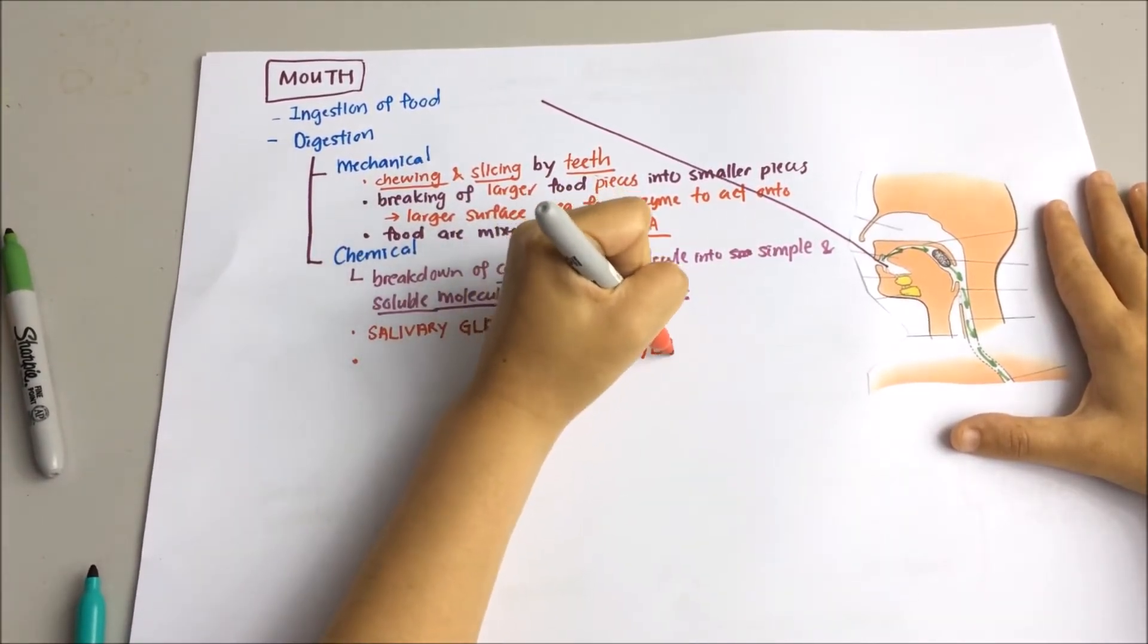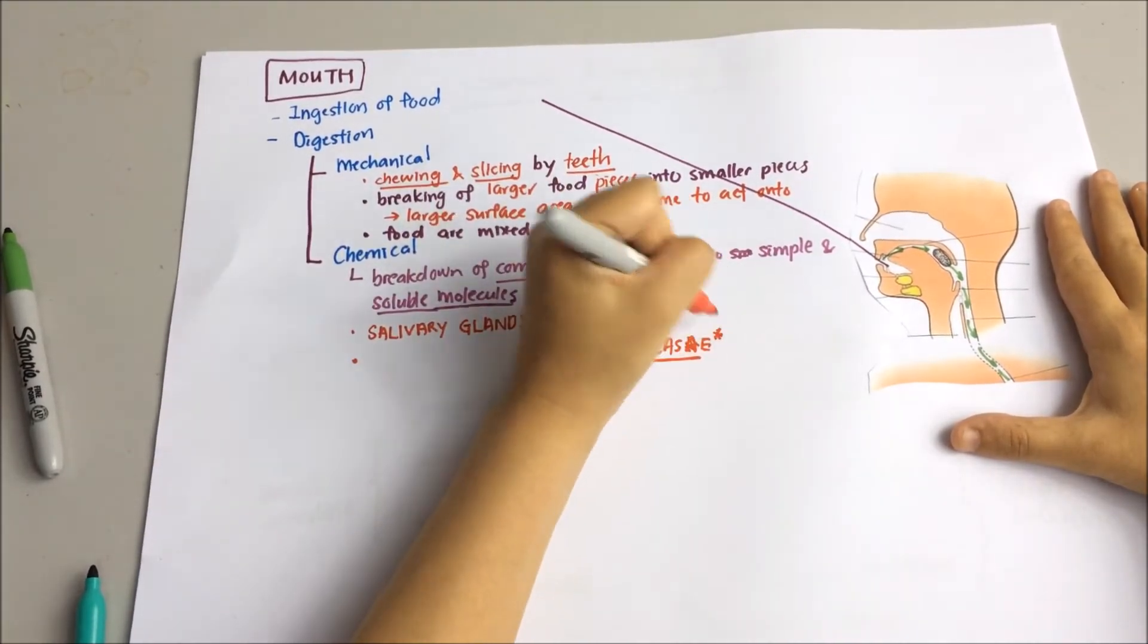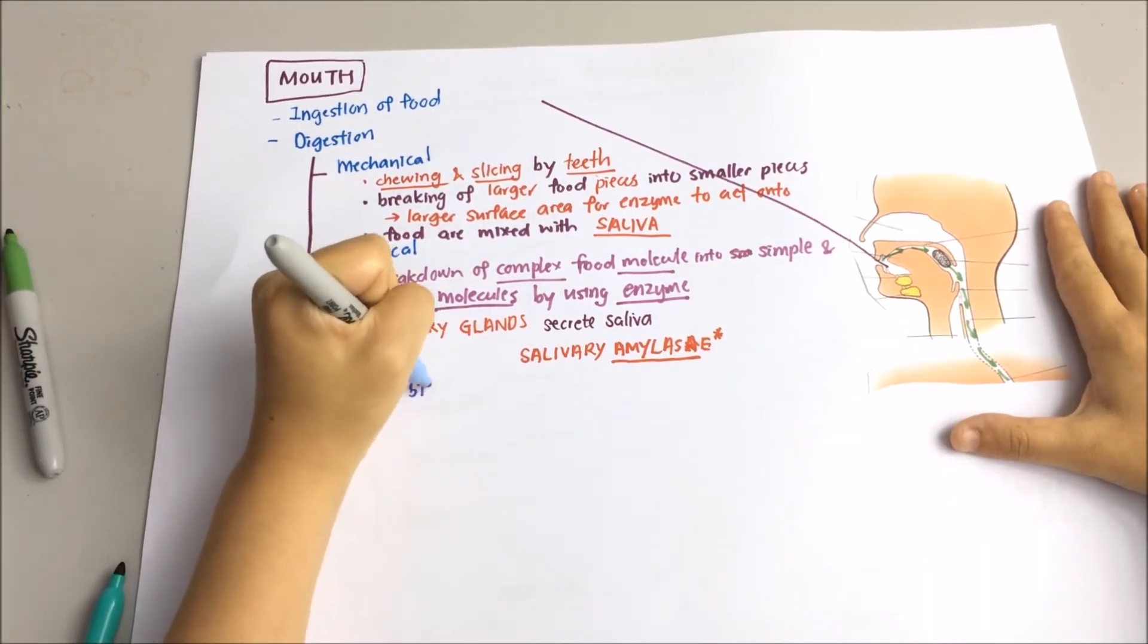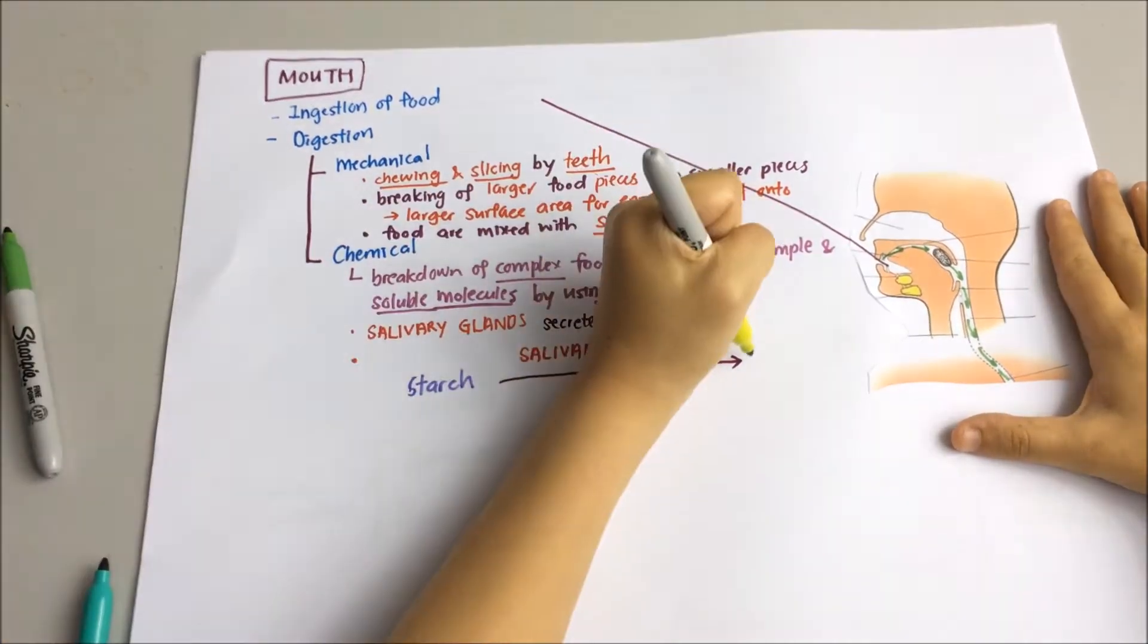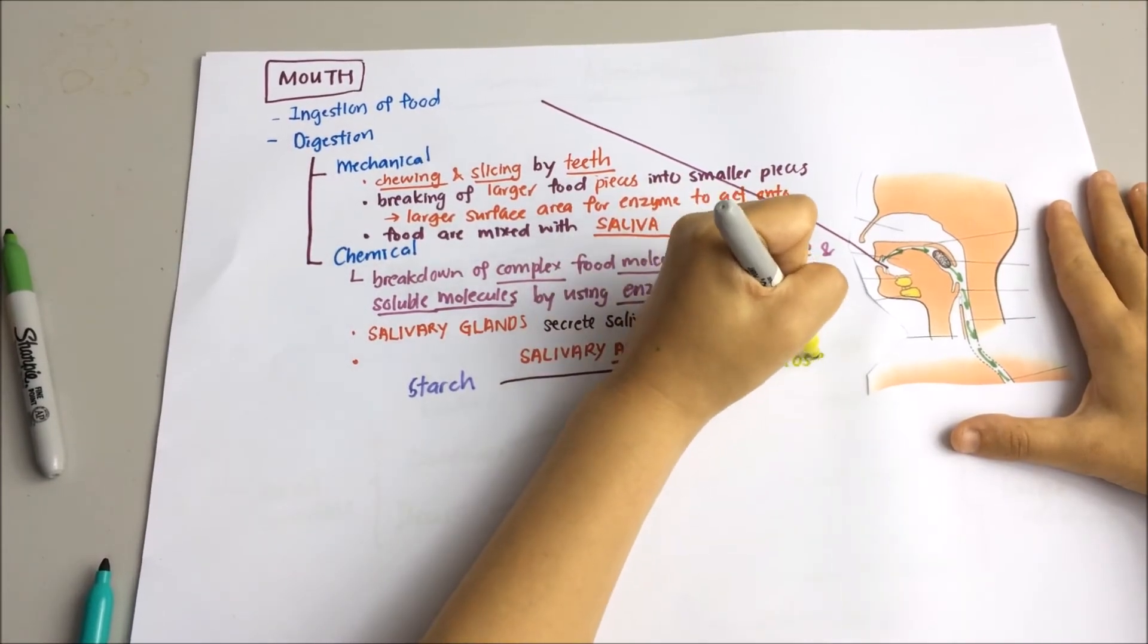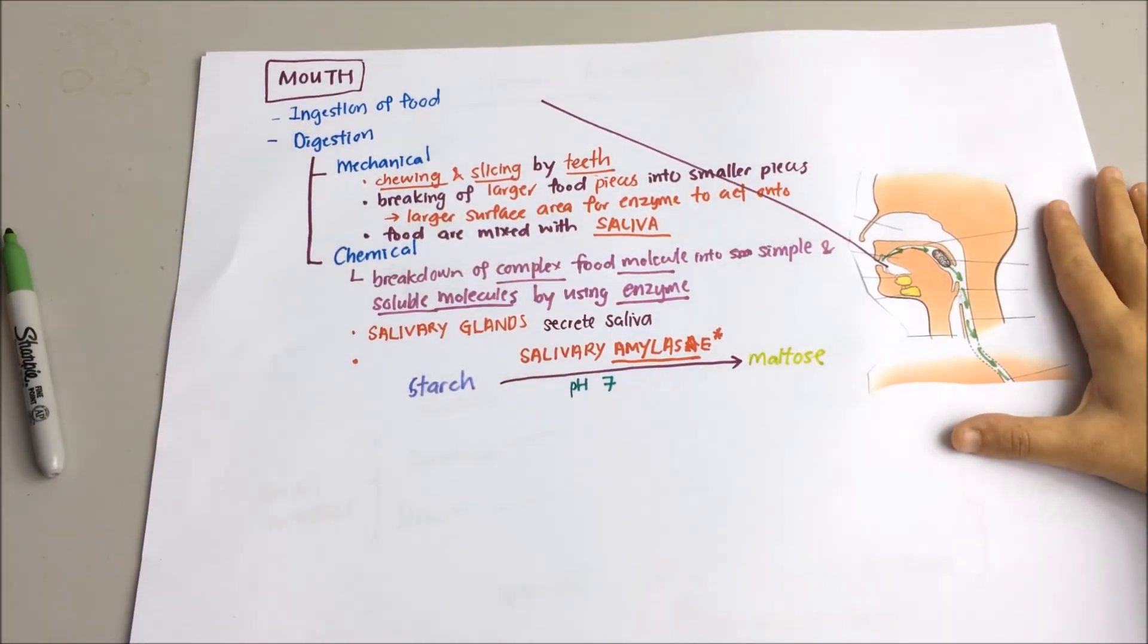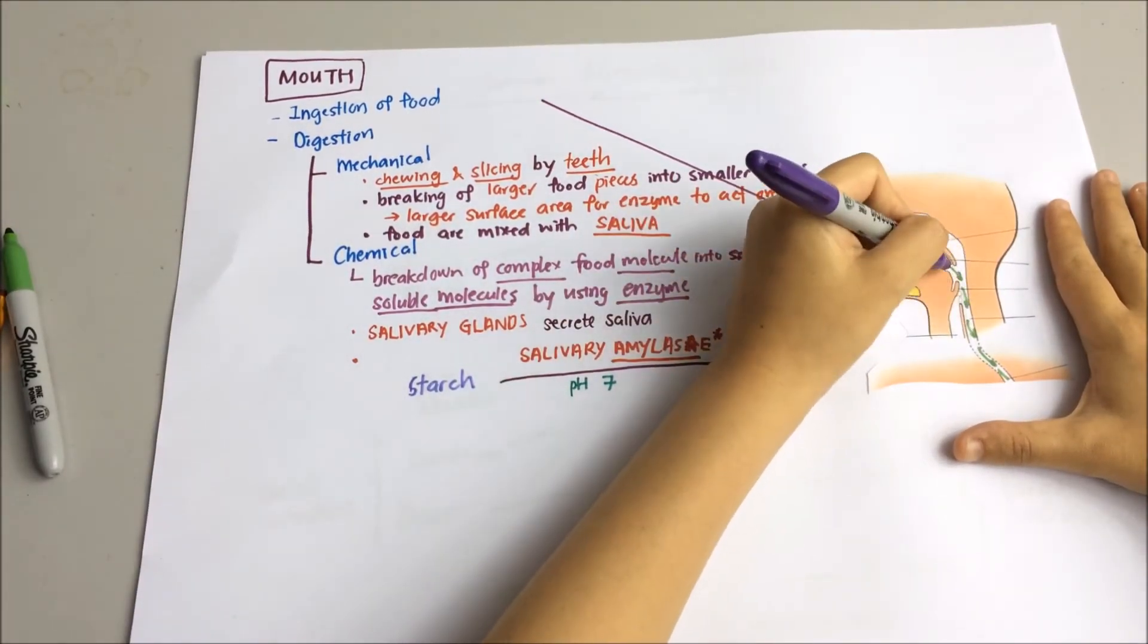The enzyme in your saliva is known as salivary amylase. This enzyme will start breaking down long carbohydrate molecules as soon as you put the food into your mouth. And the long carbohydrate molecule is known as starch. Starch will be broken down into a shorter carbohydrate molecule known as maltose. The pH in your mouth is 7, which is the optimum pH for the action of your salivary amylase.